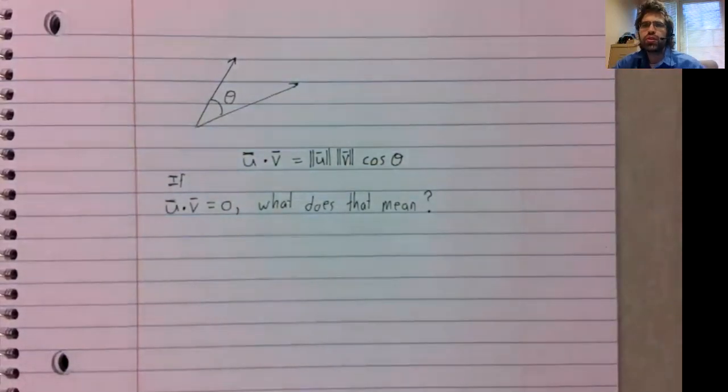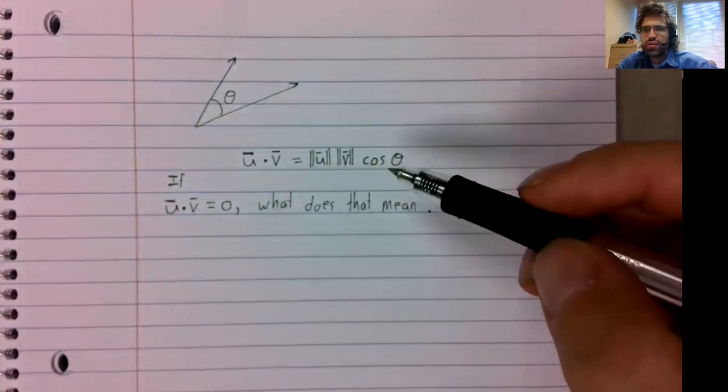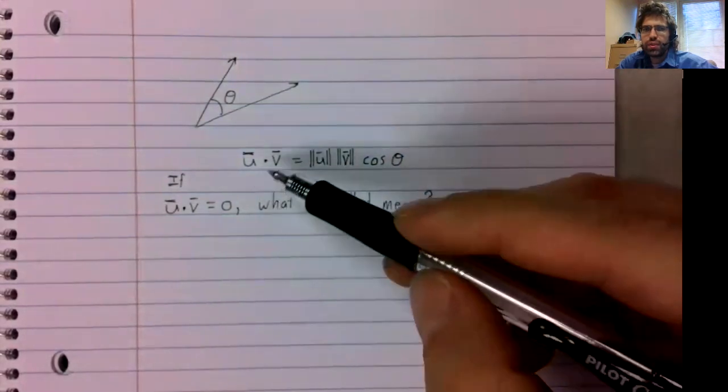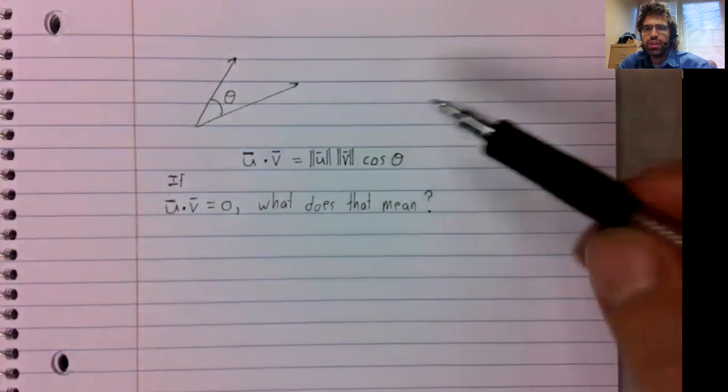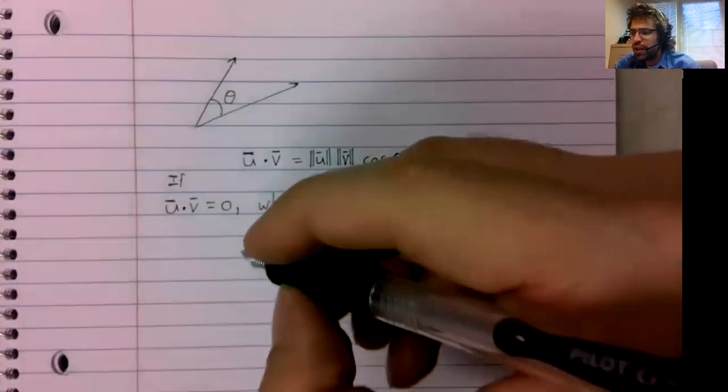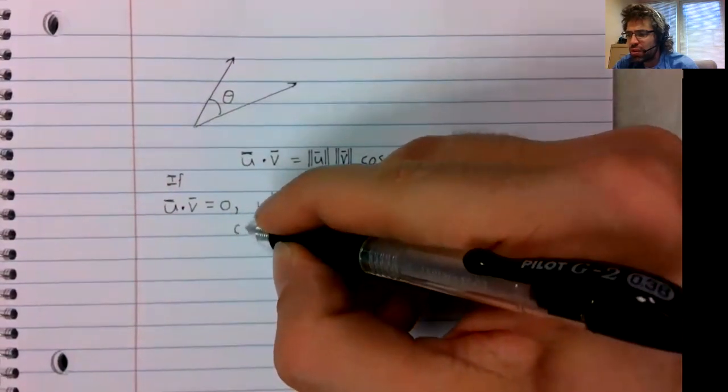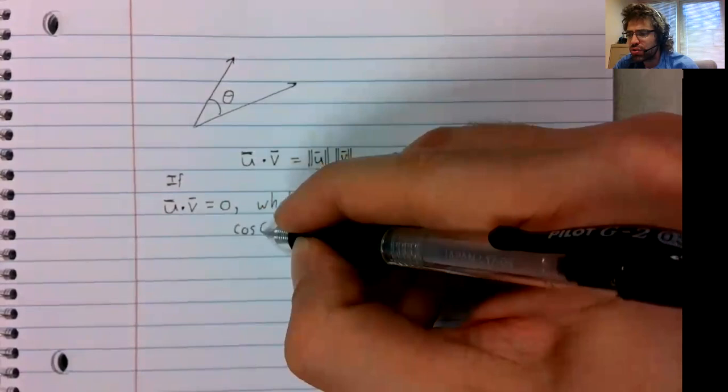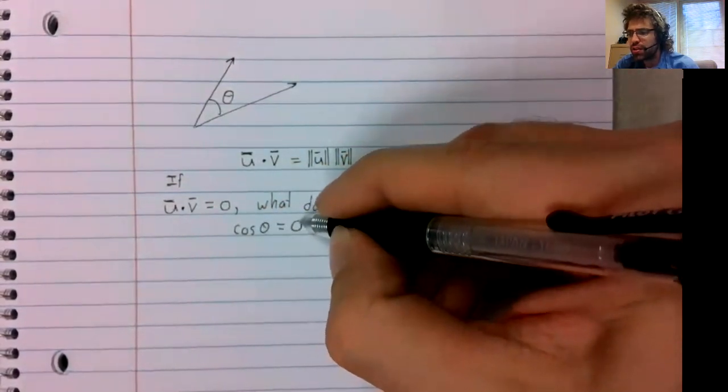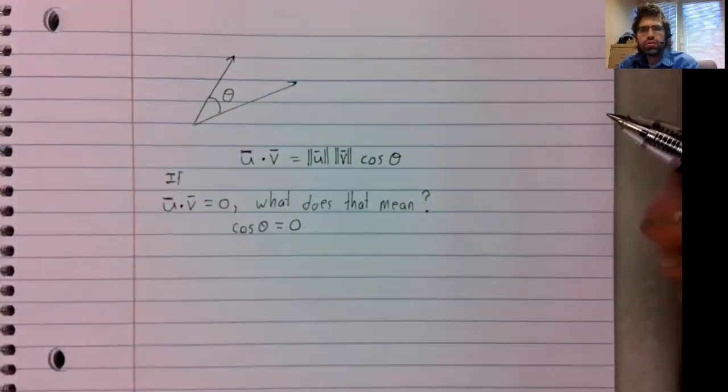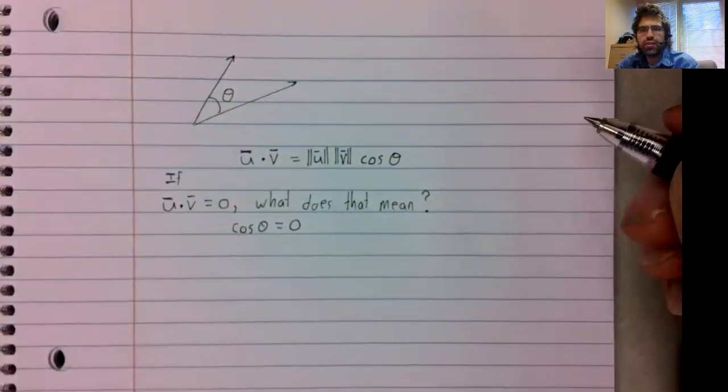We certainly don't have any kind of zero product property for dot products. But what this says is for the dot product to be zero, this product has to be zero. And since the norms of non-zero vectors are not zero, that tells us that the cosine is zero.